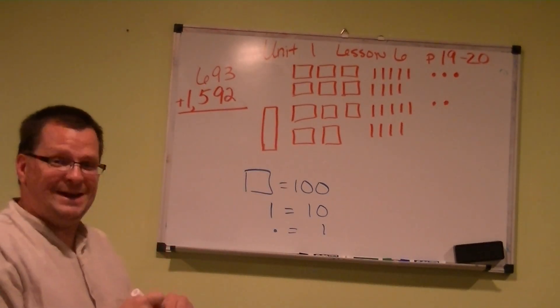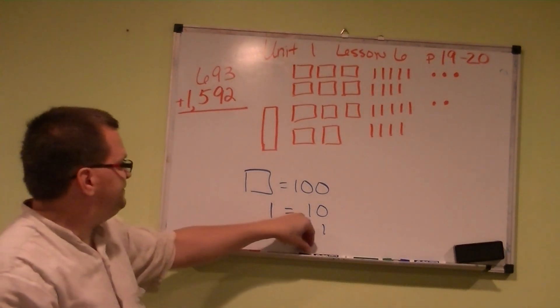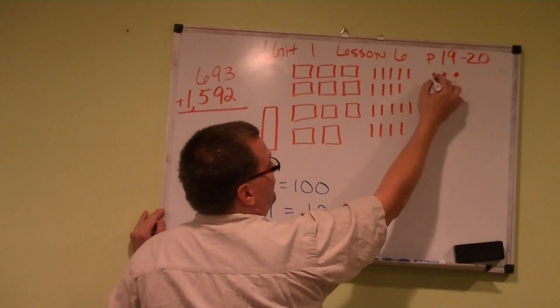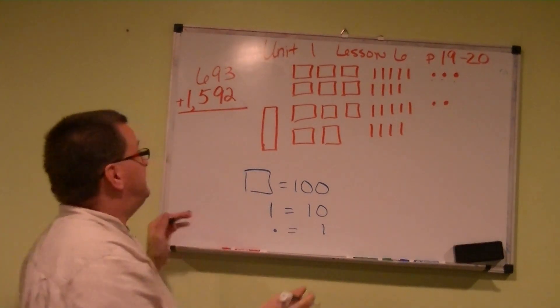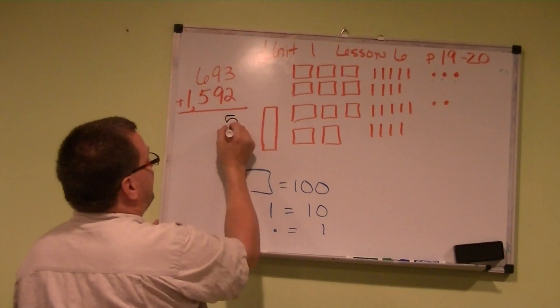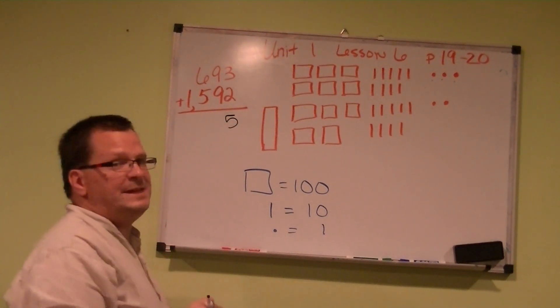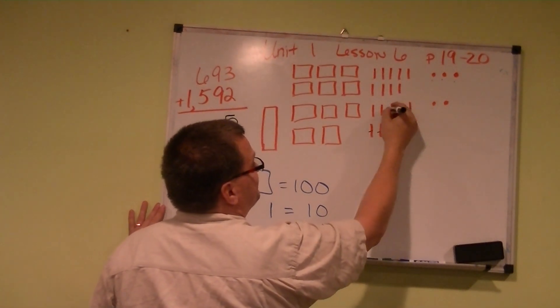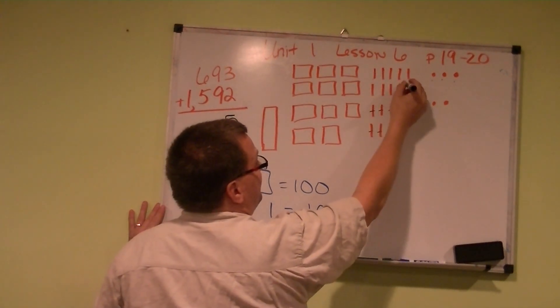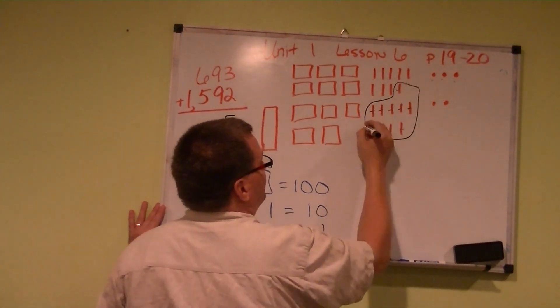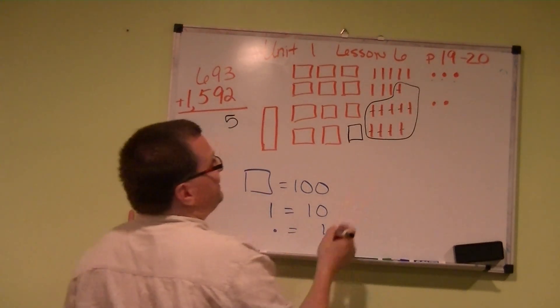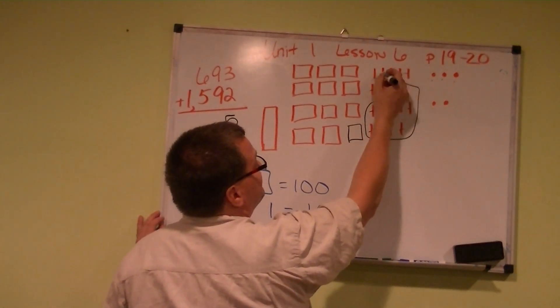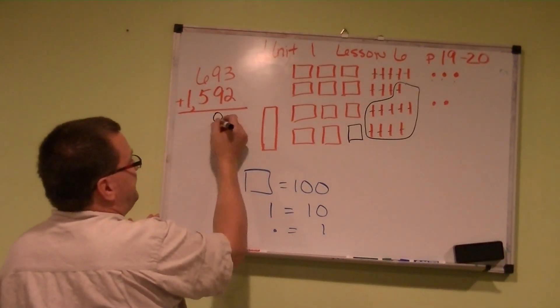So again, all we're going to do is go ahead and add up all that good information. And the first thing, we always start with the ones. We have 1, 2, 3, 4, 5. We don't have enough to make a 10, so we just have a 5. We can go ahead and put the 5 underneath the 1 spot. Look at how many tens we got. We got a lot of them here. 1, 2, 3, 4, 5, 6, 7, 8, 9, 10. So that's a new 100. So we'll put a new 100 right there. Then what do we have left? 1, 2, 3, 4, 5, 6, 7, 8. We can go ahead and put an 8 there.